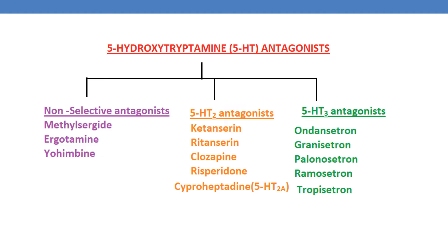Examples of non-selective antagonists are methysergide, ergotamine, and yohimbine. Coming to 5-HT2 antagonists, the drugs are ketanserin, ritanserin, clozapine, risperidone, and cyproheptadine, which is a selective 5-HT2 antagonist.